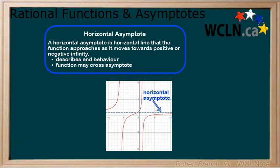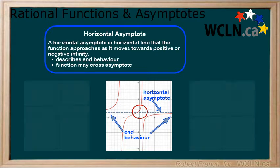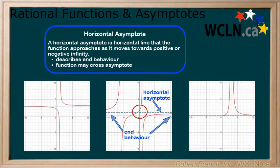A horizontal asymptote is a horizontal line that the function approaches as it moves toward positive or negative infinity. A horizontal asymptote is used to describe the end behavior of a function. This is different from a vertical asymptote, as the function may cross a horizontal asymptote at one or more points before it begins to approach it as part of the end behavior. Here are a few examples.